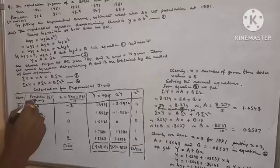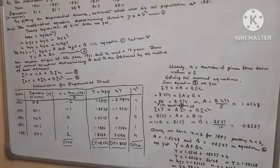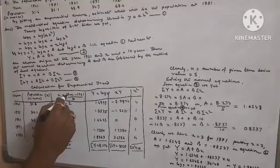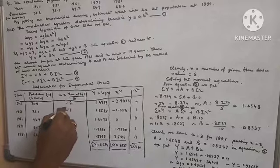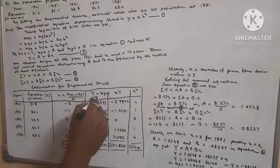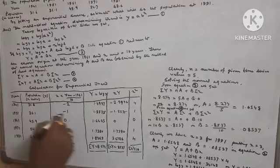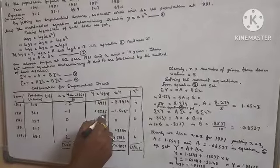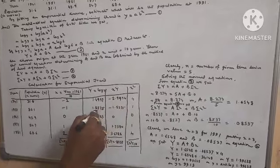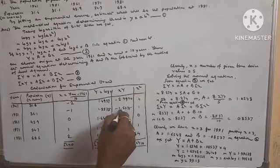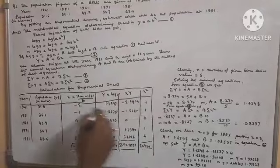For year 1951, population y = 36.1. x = (1951 − 1961) / 10 = −1. Capital Y = log 36.1 = 1.5575. x·Y = 1.5575 × (−1) = −1.5575. x² = (−1)² = 1.